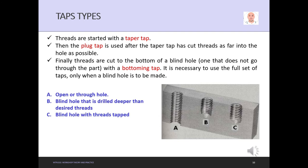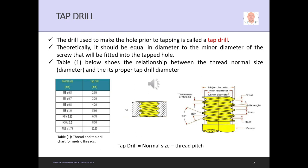The drill used to make the hole prior to tapping is called a tap drill. Theoretically, it should be equal in diameter to the minor diameter of the screw that will be fitted into the tapped hole. Table 1 shows the relationship between the thread normal size and its proper tap drill diameter. For example, M3 by 0.5: M3 means metric with 3mm nominal diameter, 0.5 is the pitch, so the tap drill is 2.5mm. We will not use 3mm because it will cut all the threaded part.